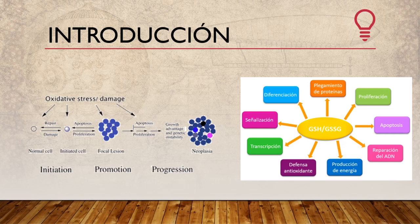El glutatión es un antioxidante, el más abundante en células eucariotas, y además tiene otras funciones: está involucrado en la transcripción, en la señalización, en la diferenciación, en el plegamiento de proteínas, en la proliferación, en la apoptosis, en la reparación de ADN y en la producción de energía. En las células encontramos el glutatión reducido (GSH), que actúa como antioxidante, y el glutatión oxidado (GSSG), también llamado glutatión disulfuro.